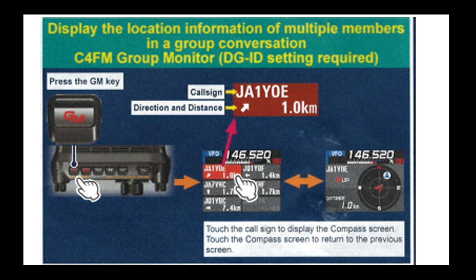The last function — Group Monitor IDs — I won't be able to fully demonstrate, as I'd need a group of people with specific ID numbers. With this feature, you can pull up a user by their call sign and find out exactly what direction they are from you, how far away, and locate their position. Press the GM button on top of the radio to bring up a list of users in the specific group, showing their call sign and how far they are from your location, plus their relative position.